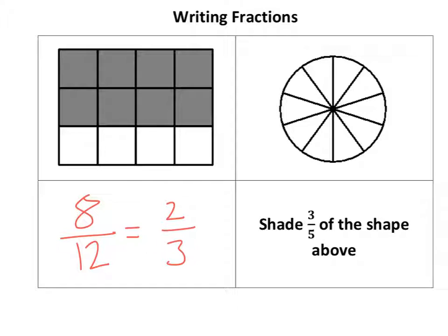Now it says, for the second one, shade 3/5 of the shape above. So I've actually got 1, 2, 3, 4, 5, 6, 7, 8, 9, 10. So,